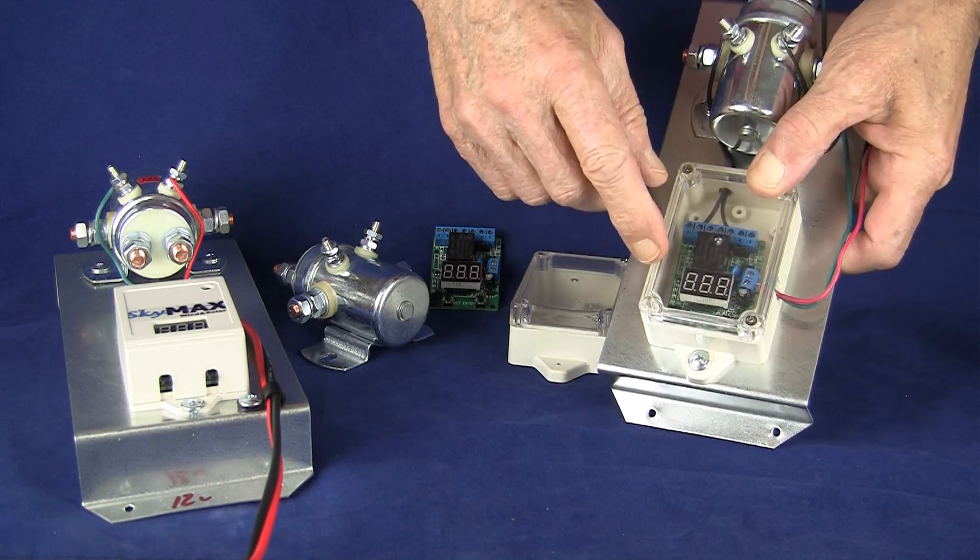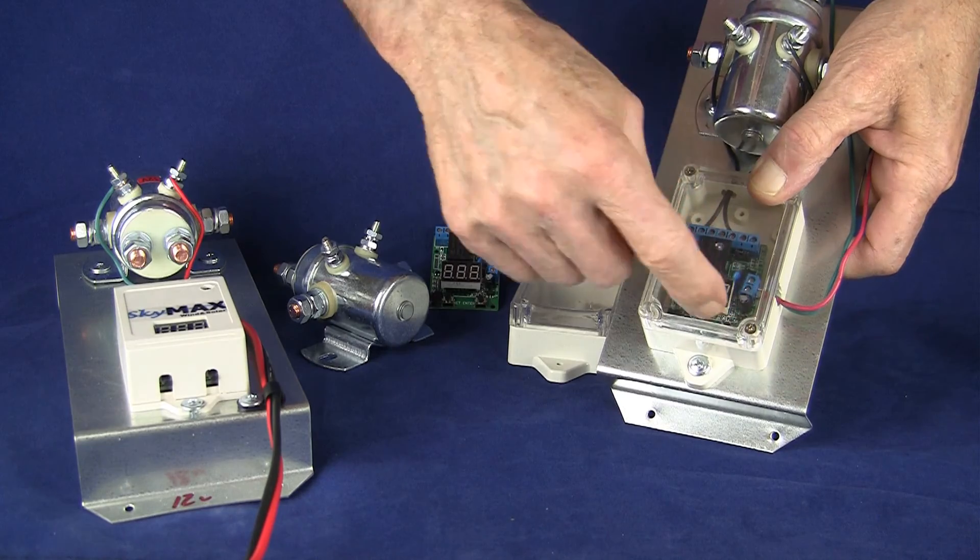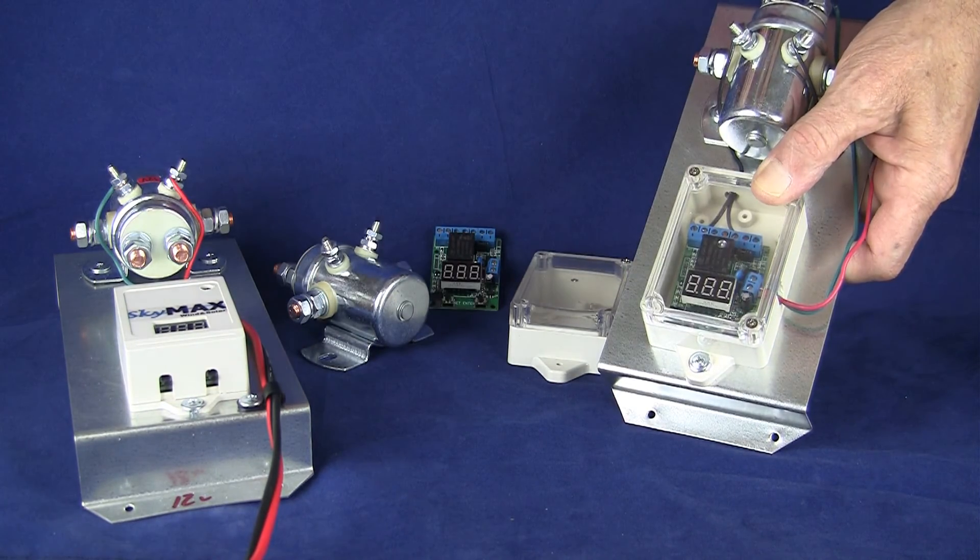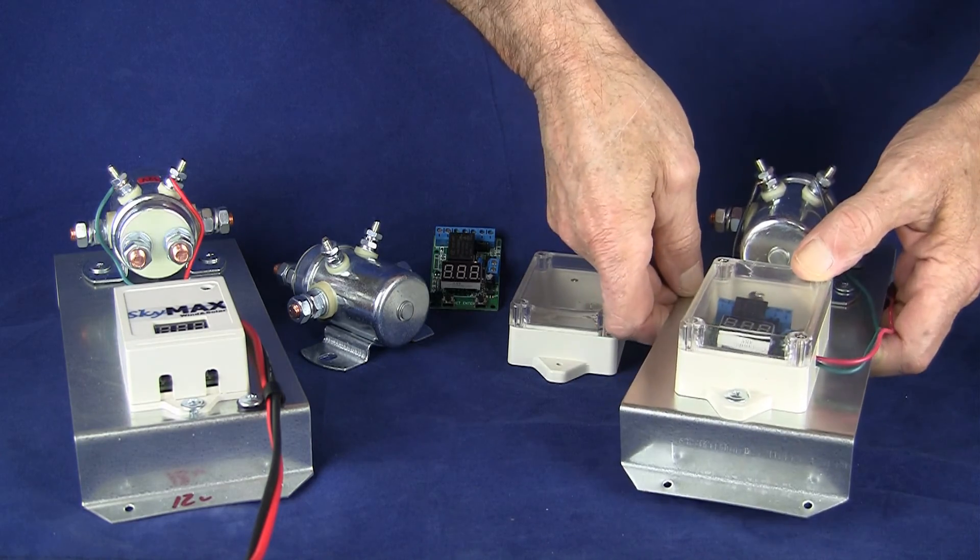And with the California model, you'll see that you have to take the cover off to get into there to get to the electronics. So it is a major difference.